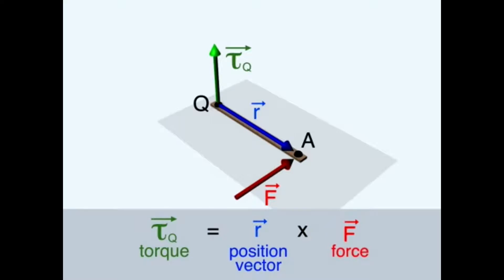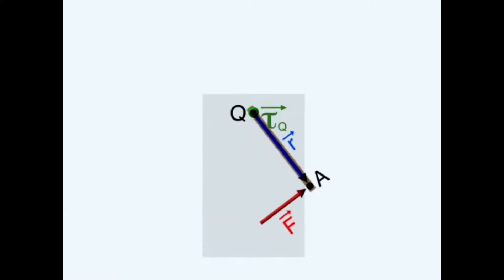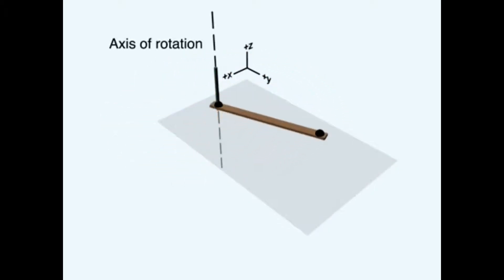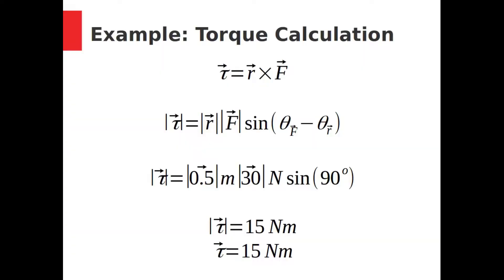That works out to a torque of 15 newton meters. To keep things simple, we will describe the direction of the torque in terms of whether it would cause a counterclockwise rotation or a clockwise rotation. Counterclockwise is considered the positive direction and clockwise is considered the negative direction. Since this torque is causing counterclockwise motion, we give it a value of positive 15 newton meters.